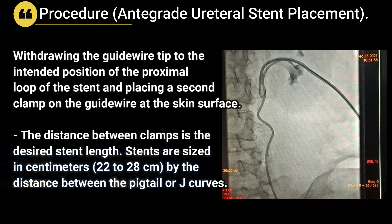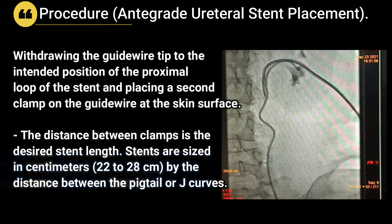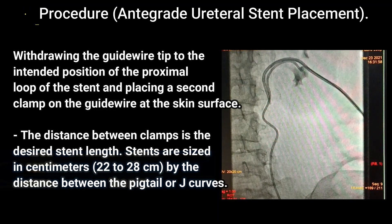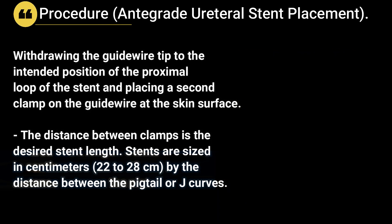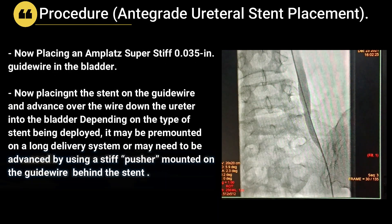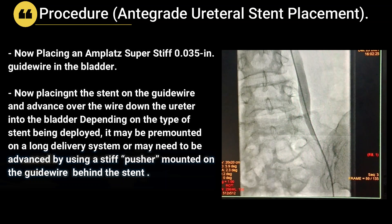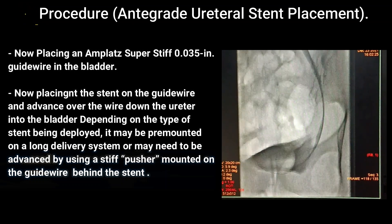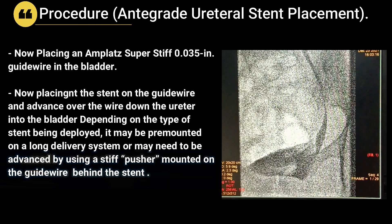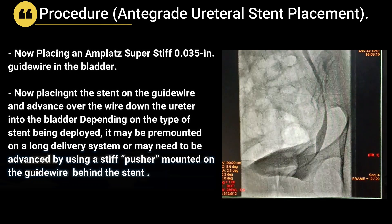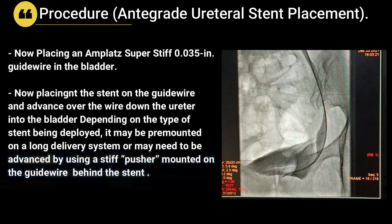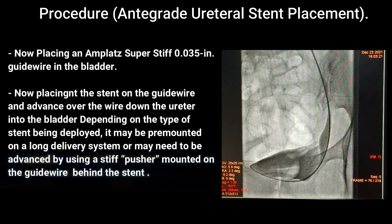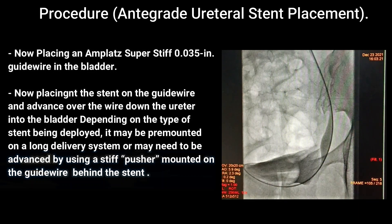The distance between the clamps is the desired stent length. Stents are sized in centimeters — 22 to 28 centimeters — by the distance between the pigtail or J-curves. An Amplatz super stiff guide wire is then placed in the bladder. The stent is placed on the guide wire and advanced over the wire down the ureter into the bladder. Depending on the type of stent being deployed, it may be pre-mounted on a long delivery system or may need to be advanced using a stiff pusher mounted on the guide wire behind the stent.